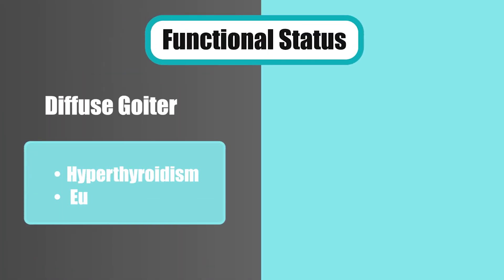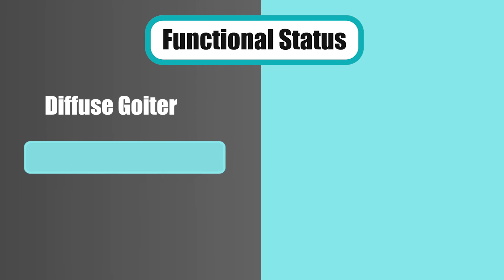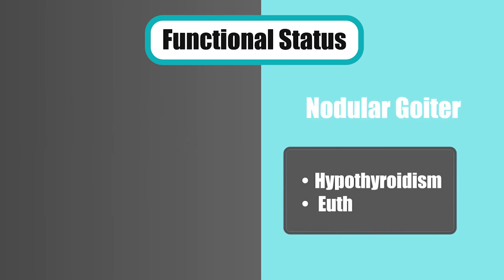Feature number seven is functional status. The functional status in diffuse goiter is hyperthyroidism or euthyroid. But the functional status in nodular goiter is hypothyroidism or euthyroid.